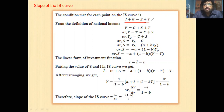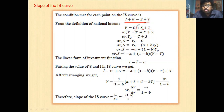From the definition of national income, we have Y equal to C plus S plus T, where C is consumption, S is saving, T is tax, and Y is income.